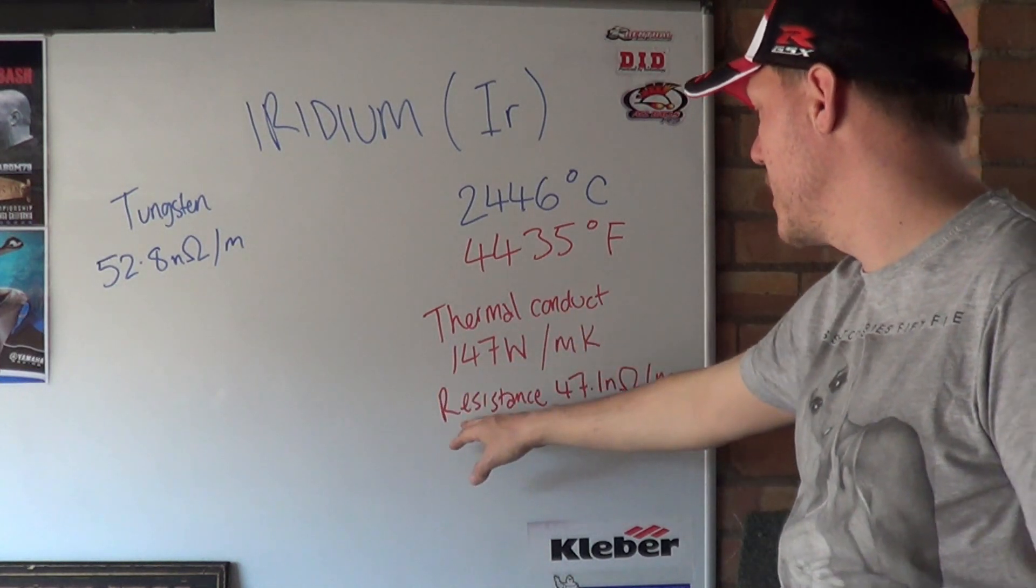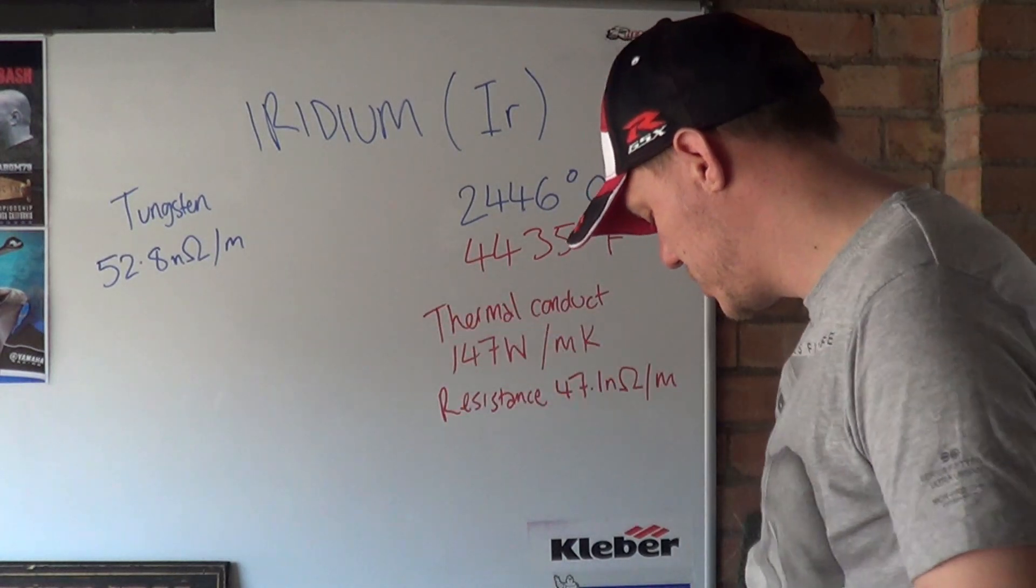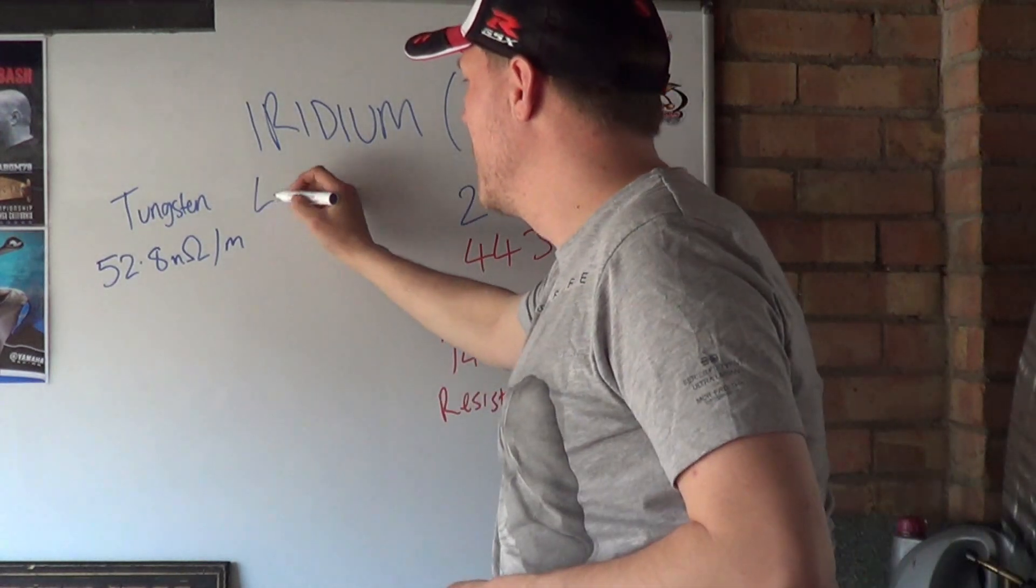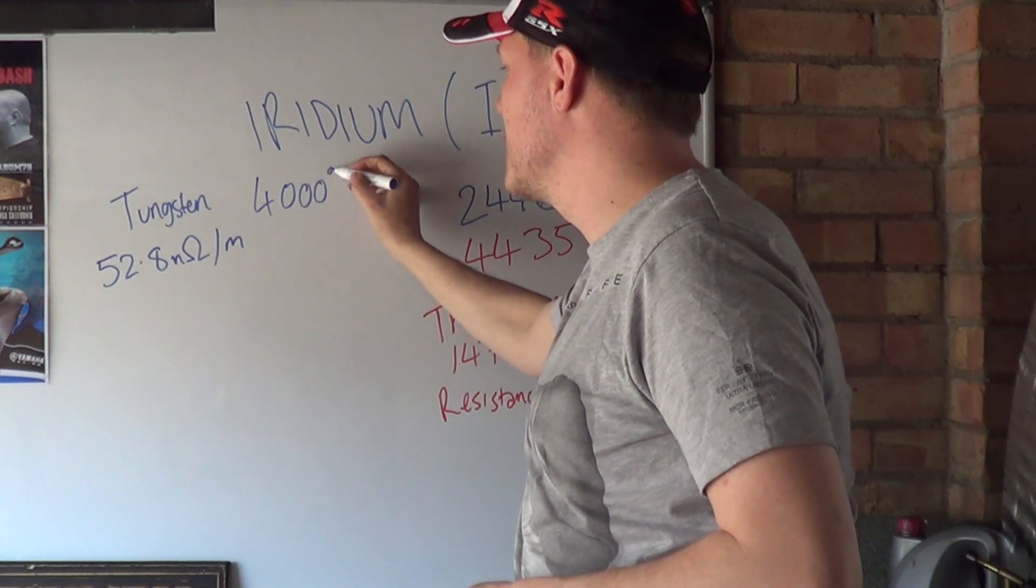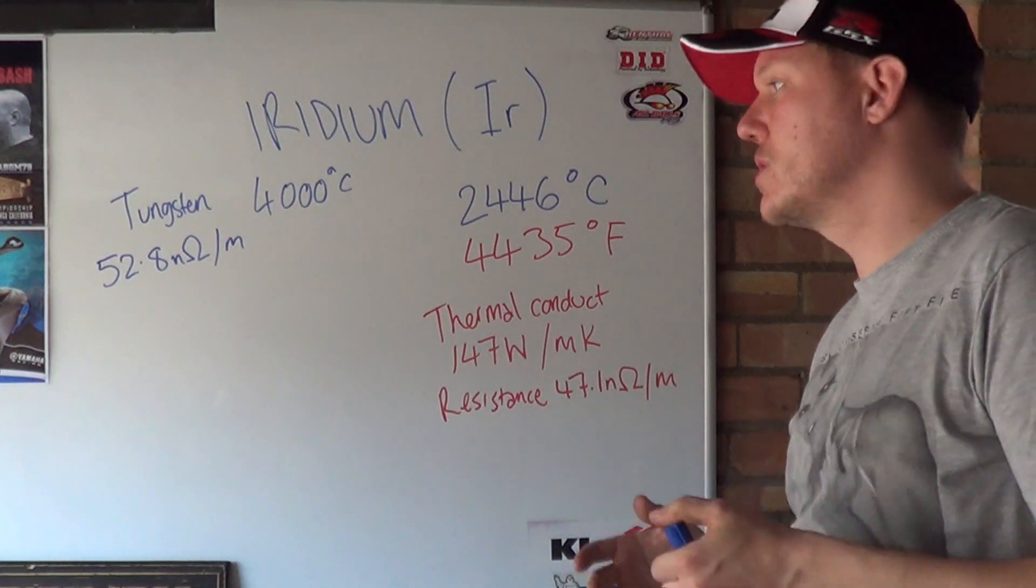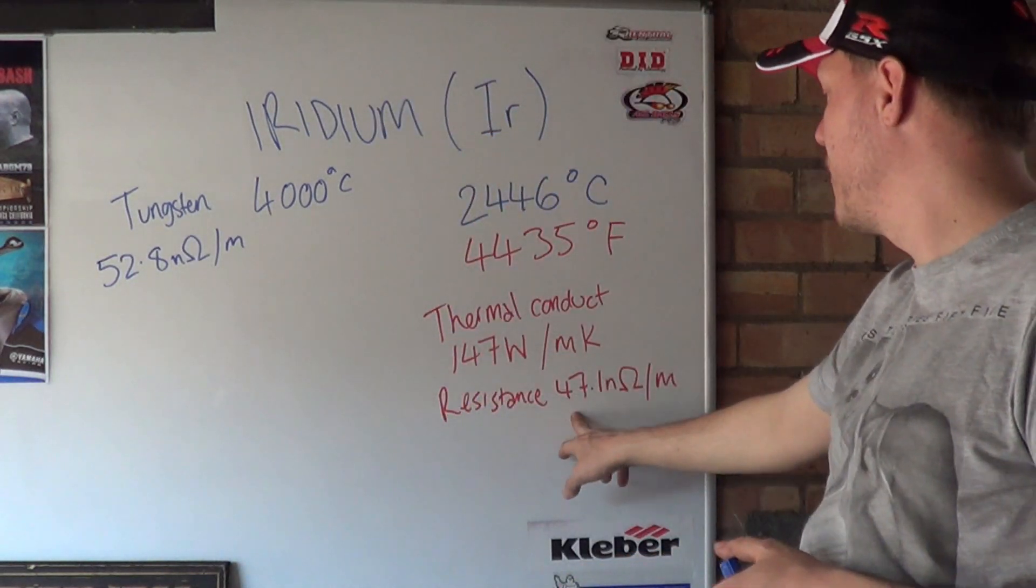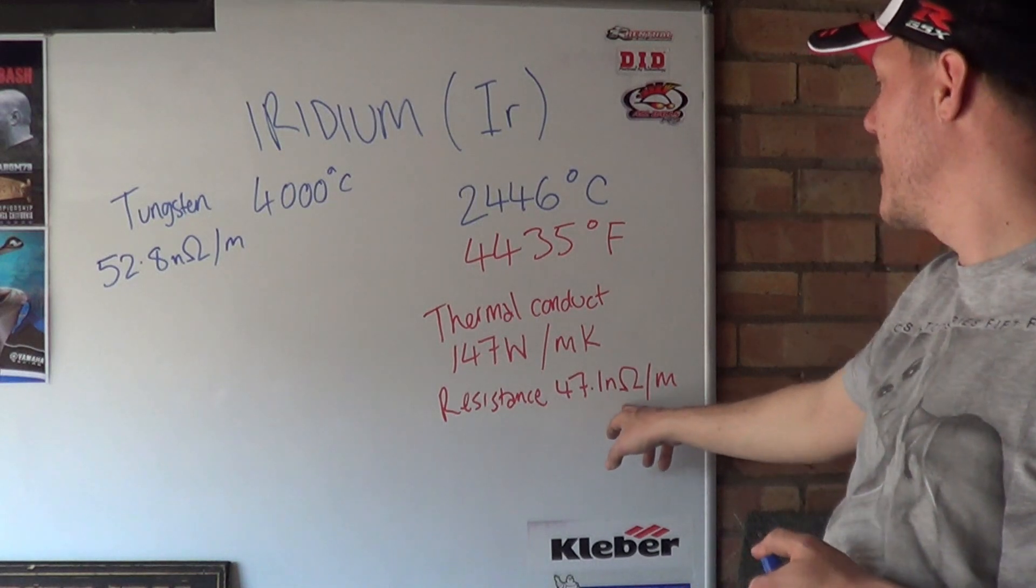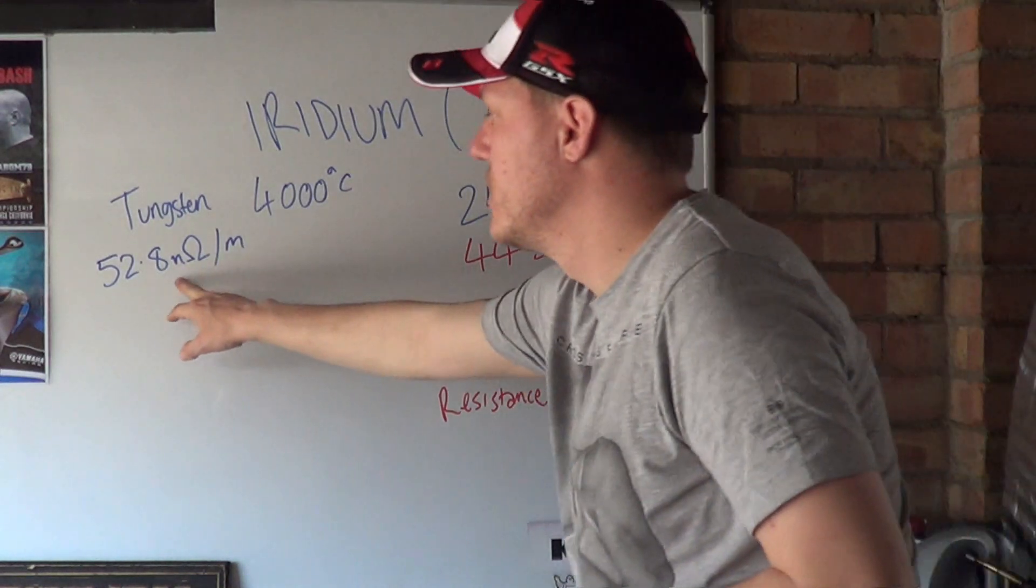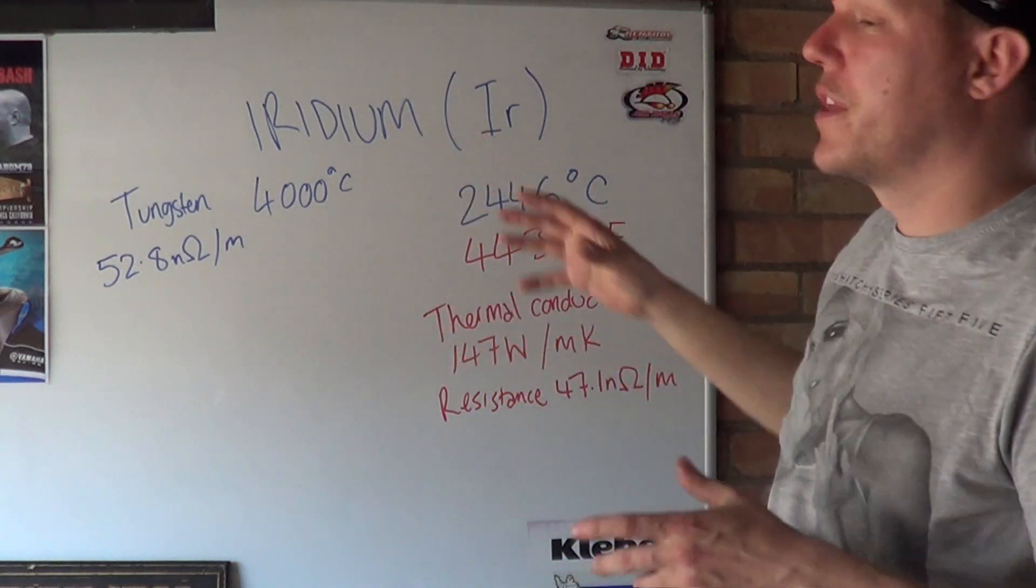Tungsten has a melting temperature of around 4000 degrees Celsius, so you'd think you'd want tungsten instead of iridium. But the thing is with tungsten, its resistance is higher than the 47.1 nano-ohms per meter. Tungsten is a lot bigger. The thing is with iridium, it's how stable it stays at these high temperatures.